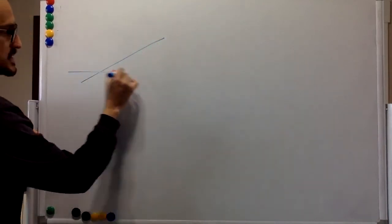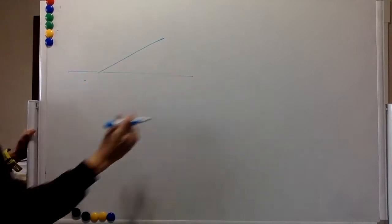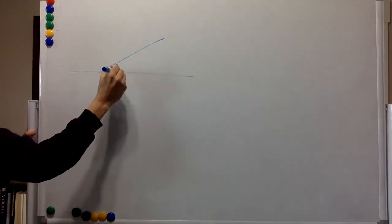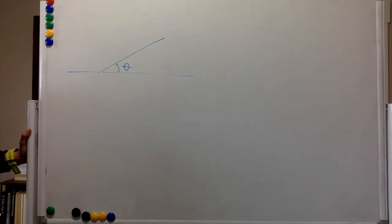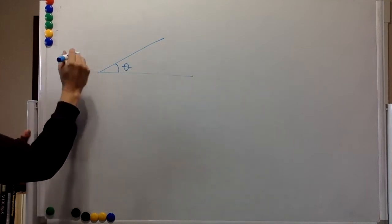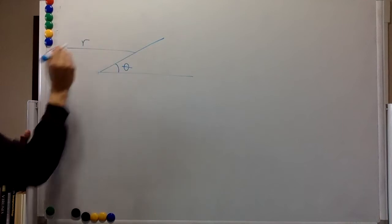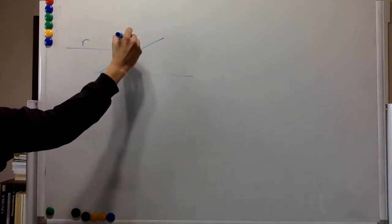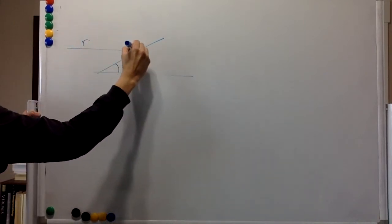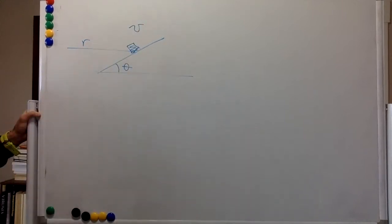It's going to be banked like that. This is the horizontal. There's an angle theta over there. If the radius of the curve is r, how great will the banking angle theta be so that for a car over here going at speed v...